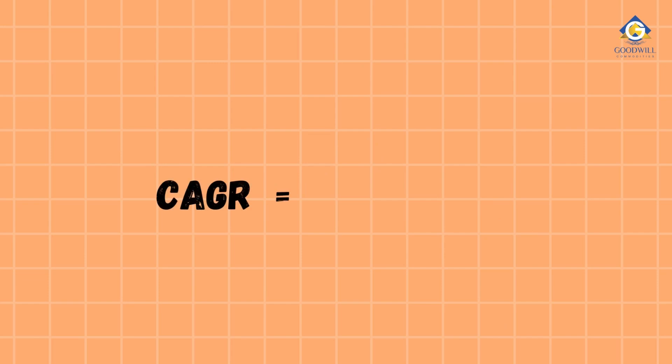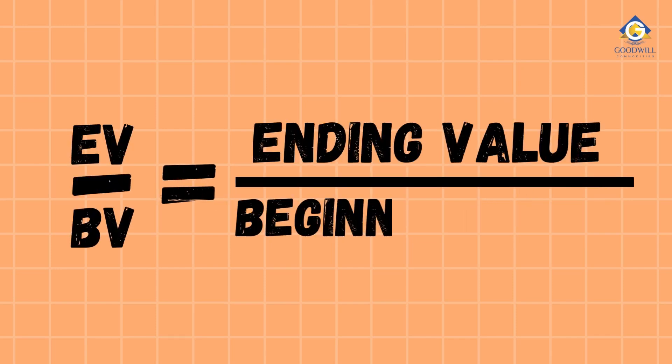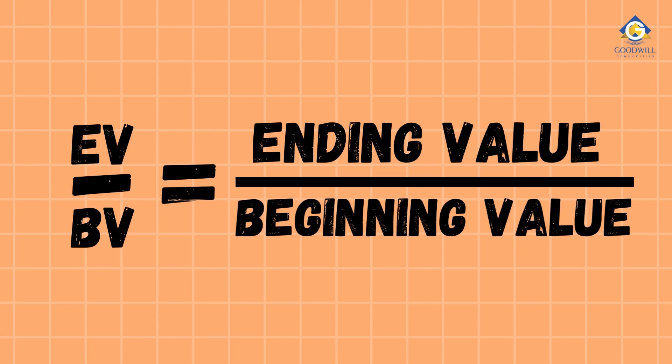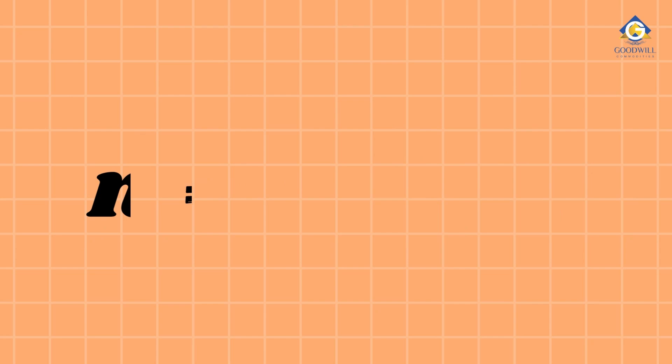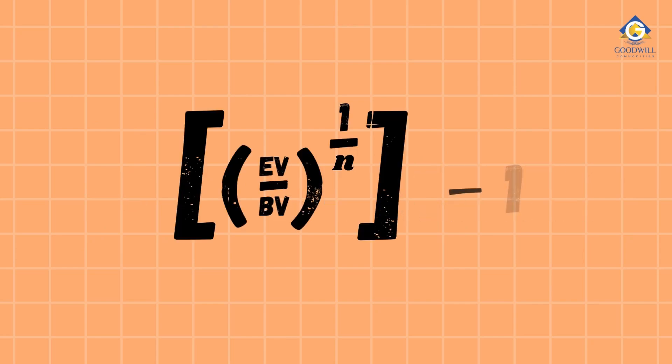CAGR equals EV divided by BV to the power 1 divided by N minus 1. The formula might look intimidating, but don't worry, we'll break it down step by step. EV divided by BV stands for ending value divided by beginning value. This represents how much your investment has grown over time. N represents the number of years the investment has been held. Subtracting 1 from the whole expression is essential to express the growth as a percentage.